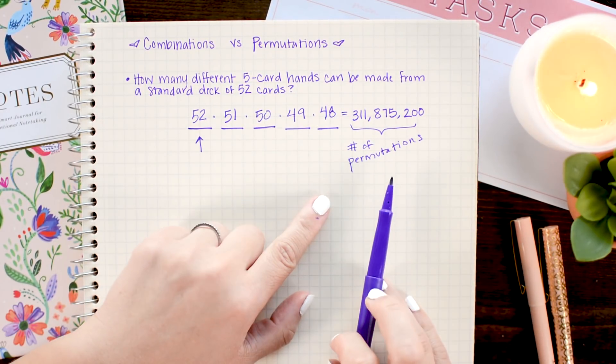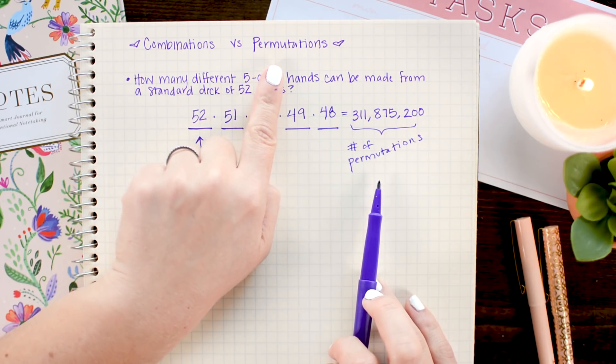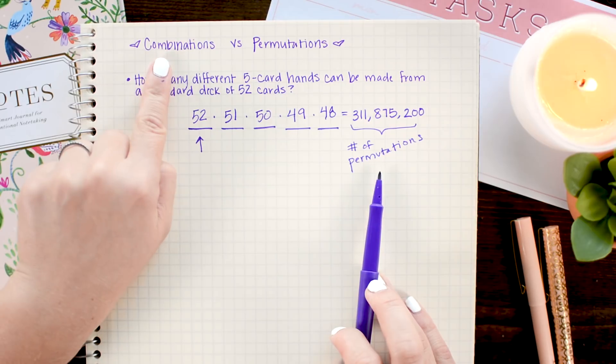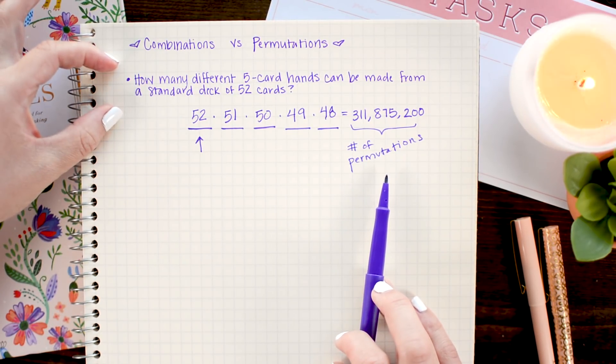Remember in our introduction, I told you that the difference between combinations and permutations is order. In permutations, the order matters. In combinations, it doesn't. So in the problem that we want to solve, order doesn't matter.